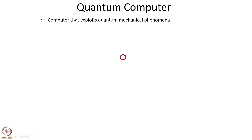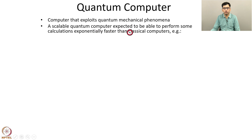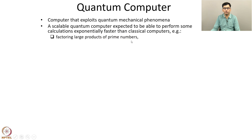What is the quantum computer? It is a computer that exploits quantum mechanical phenomena such as superposition and entanglement. A scalable quantum computer is expected to be able to perform some calculations exponentially faster than classical computers. One example is factoring large products of prime numbers. If n is p times q, where p and q are prime numbers, the security of RSA is based on the fact that there is no known efficient algorithm to factor n into its factors p and q. But an algorithm called Shor's algorithm has been shown to be able to efficiently factor products of prime numbers using a quantum computer.